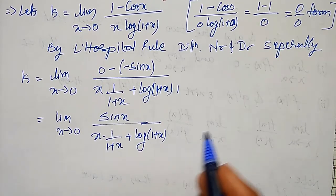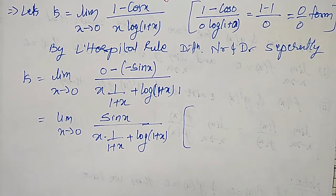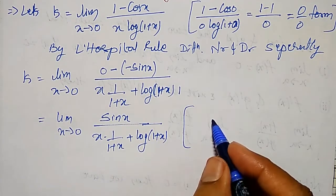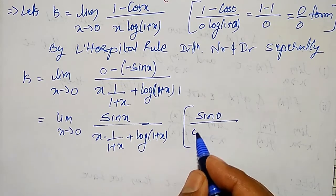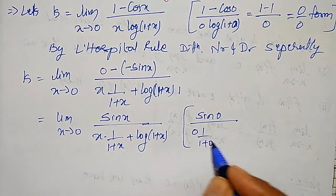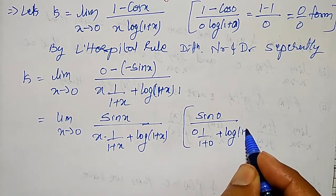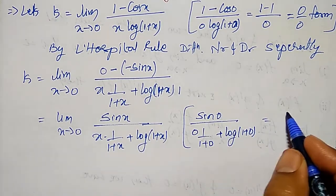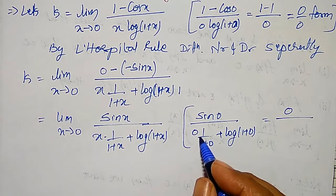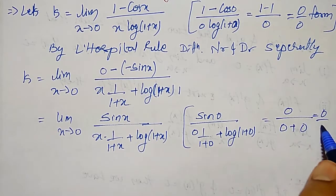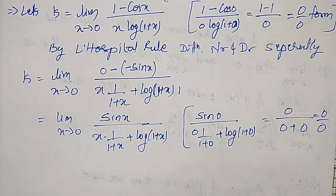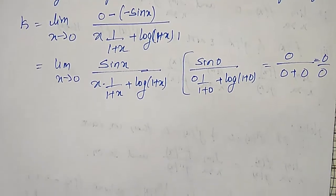Now if I substitute x equal to 0 to check: sin 0 divided by 0 into 1 divided by (1+0) plus log(1+0). Sin 0 is 0, and log 1 is also 0, so I get 0 divided by 0 again — it is still a 0 by 0 form. Since I am getting a 0 by 0 form again, I can apply L'Hôpital's rule once more.